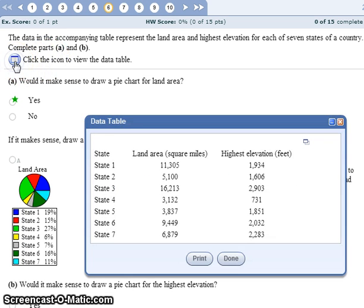And you can see exactly how big each piece of the pie should be by figuring out what percentage of the total land area each state possesses.